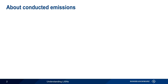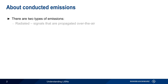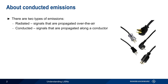To understand what LISNs are and how they're used, we first need to start by discussing so-called conducted emissions. Radiofrequency emissions can be grouped into two main categories: radiated emissions, which propagate over the air or through free space, and conducted emissions, which are propagated along a conductor — usually a wire or a trace.